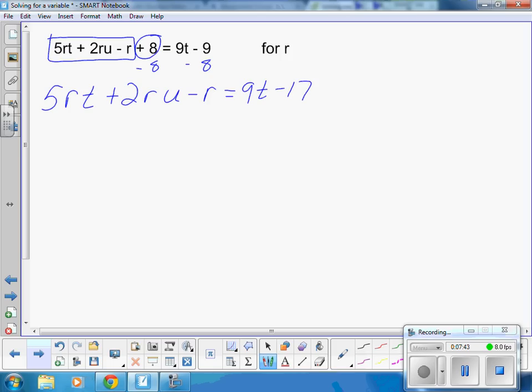So I'm left with 5RT plus 2RU minus R equals 9T minus 17. Some of you might remember the distributive property. We did it back in November, and we've done it in various situations throughout in many different lessons. What I'm going to do here is what's called the reverse distributive property, or the other term that you're going to learn is factoring.